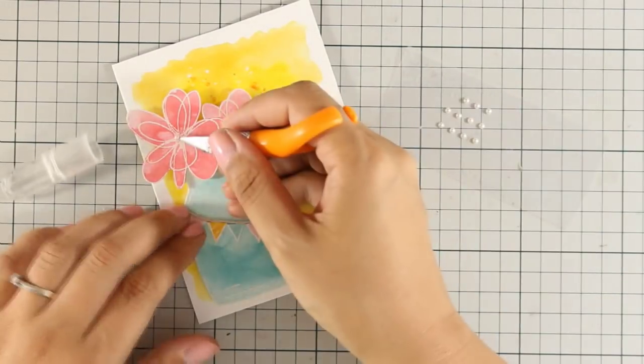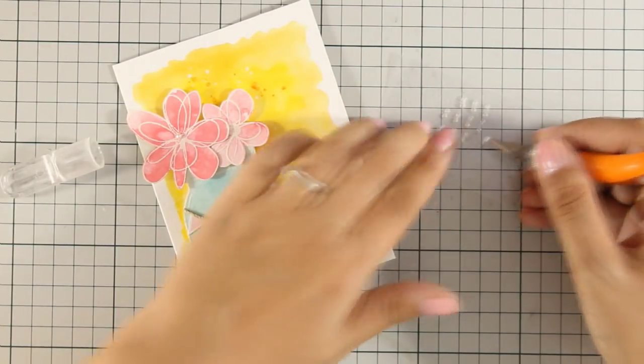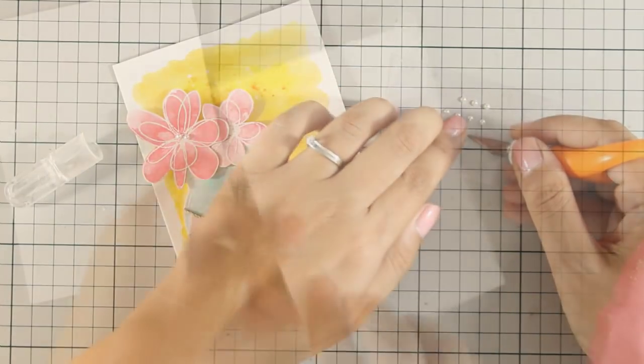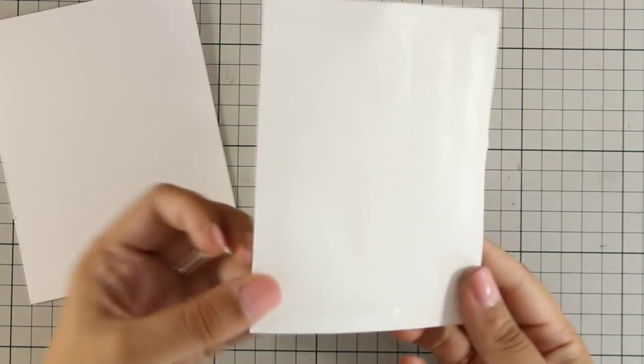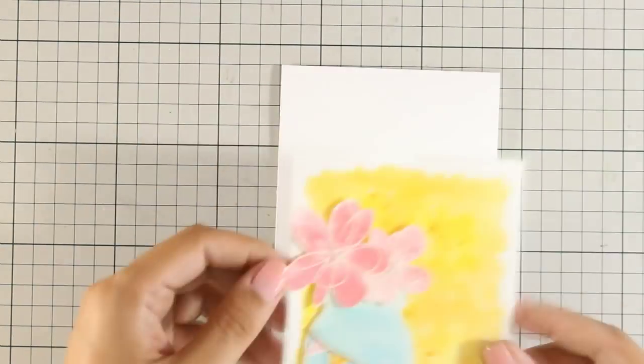To embellish the card just a little bit more, I'm going to stick 3 pearls at the center of the flowers and my card is pretty much finished. All that's left to do is to stick this on top of a top folding card that's 4 1/4 x 5 1/2.